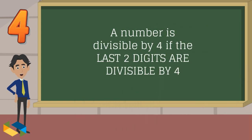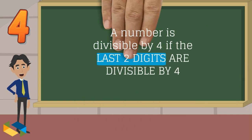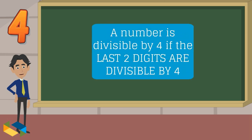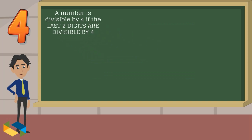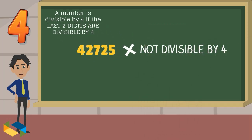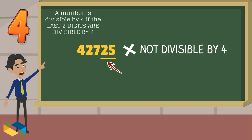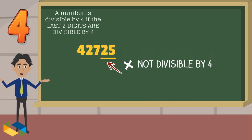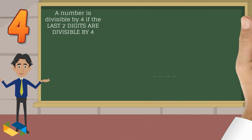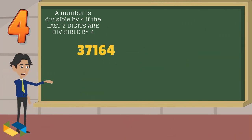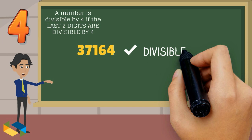For any number to be divisible by 4, you simply check its last two digits. If these are divisible by 4, then the number is also divisible by 4. For example, 42,725 is not divisible by 4 as its last two digits are not divisible by 4. On the other hand, 37,164 is divisible by 4, the last two digits being 64.